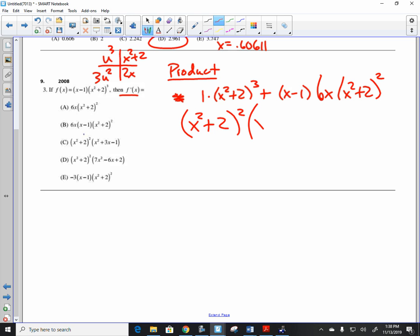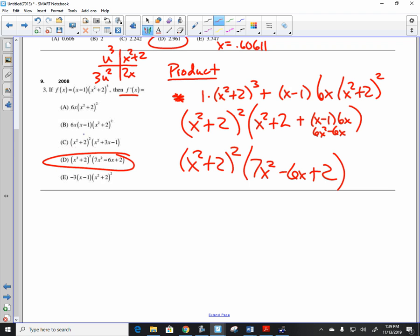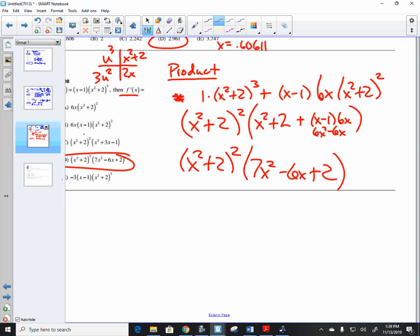Now, the AP exam is going to have you factor this out. We factor out x squared plus 2 quantity squared. What do you have left? I have an x squared plus 2 and plus an x minus 1 times 6x. If you distribute this, you get 6x squared minus 6x. So, we have x squared plus 2 quantity squared times 6x squared and x squared is 7x squared. We got a minus 6x. We got a plus 2. So, it looks like I've got letter D right there. That's where you're rolling. Okay. We've got 12 minutes in. Let's see if we can finish this off.